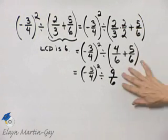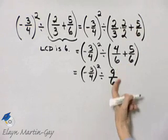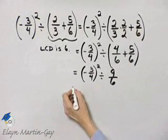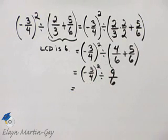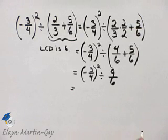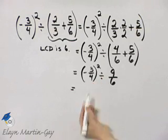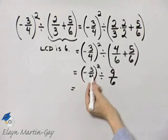Now we'll go ahead and simplify this fraction, but while we are simplifying this fraction, let's go ahead and perform the squaring of this fraction. This is negative three-fourths quantity squared, so it's negative three-fourths times negative three-fourths. Well what is a negative times a negative?